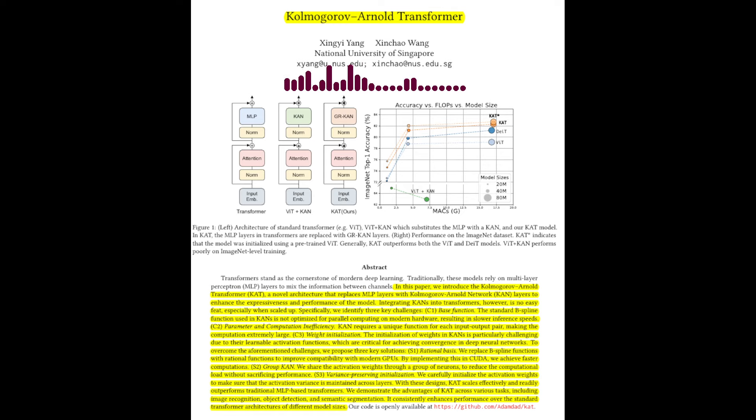CANs are theoretically more parameter efficient than MLPs, meaning they can model complex functions with fewer parameters. This could lead to more compact and computationally efficient transformer models.